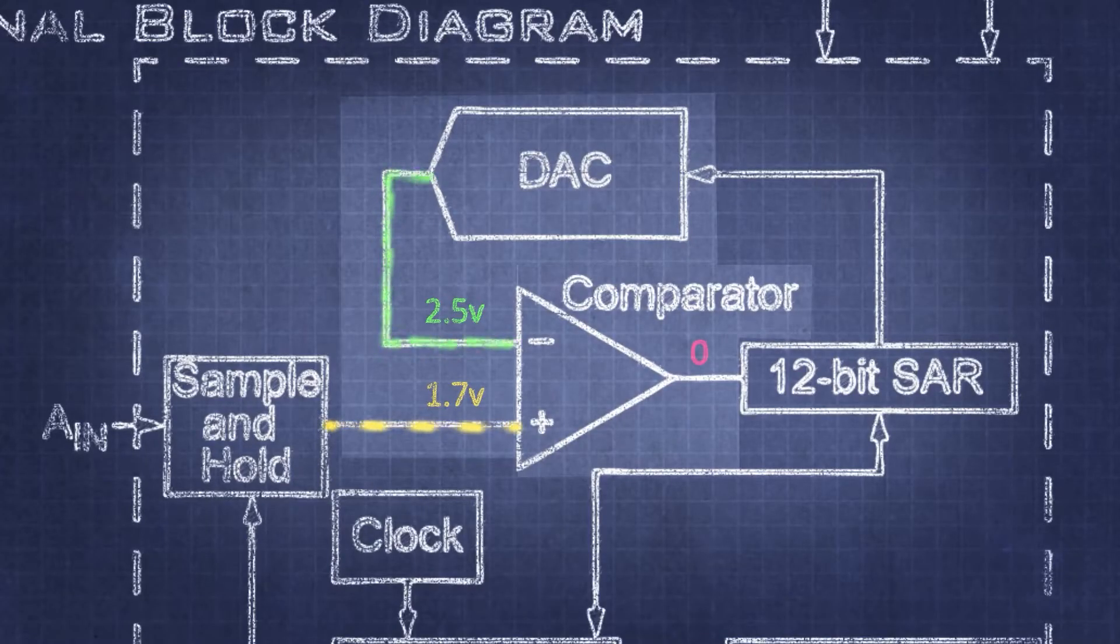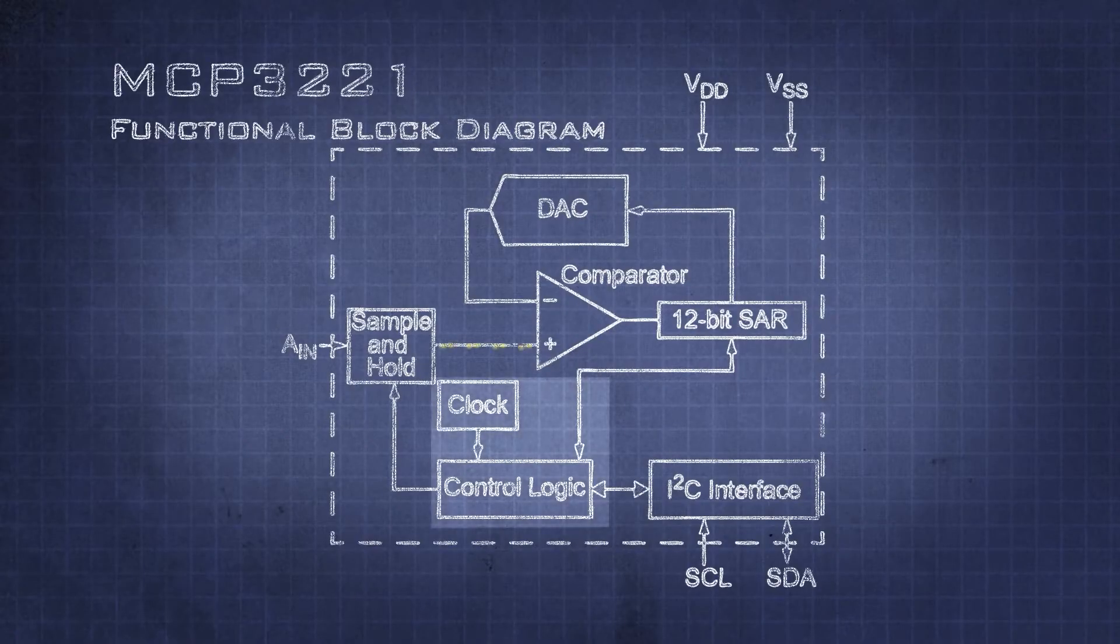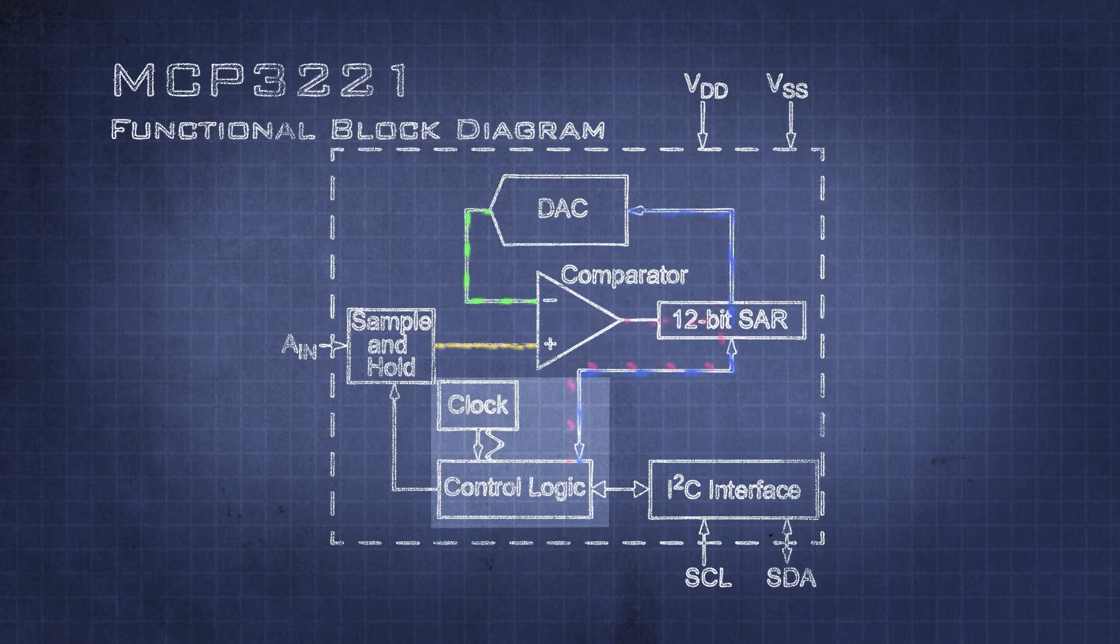The comparator will test our reference voltage generated by the DAC to the input voltage and output a signal indicating if the reference voltage is higher or lower. Using this signal we can build some logic that decides if we need to keep this bit of the DAC high or low as we step through the DAC's bits.